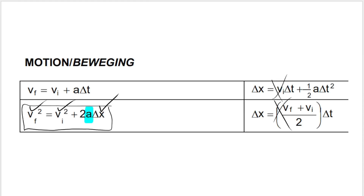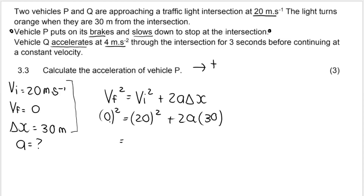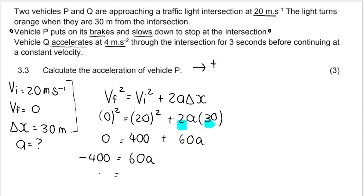Write down the formula first, then substitute: final velocity squared equals initial velocity squared plus 2 times acceleration times displacement. Final velocity is zero, initial velocity is 20 — don't forget to square it — acceleration is what we're looking for, and displacement is 30 meters. Zero squared is zero, 20 squared is 400. Simplifying: 2a times 30 gives 60a. Taking 400 over gives negative 400 equals 60a. Negative 400 divided by 60 gives negative 6.667 (repeating).